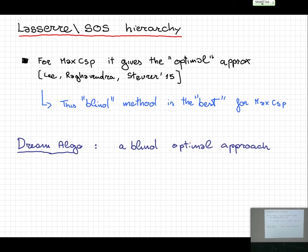There is a very important result this year — James already talked about it — that for max CSP, Lasserre gives a sort of optimal approximation in the sense that if you consider only SDP relaxations of certain sizes, the Lasserre Sum-of-Squares Hierarchy is optimal. The interest around this algorithm is also because it's a sort of blind optimal approach, at least for max CSP.